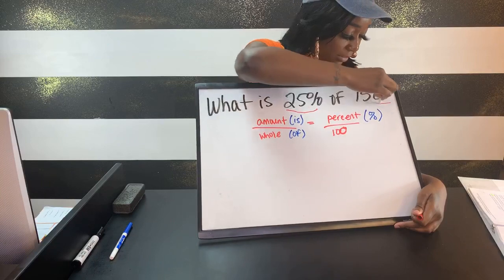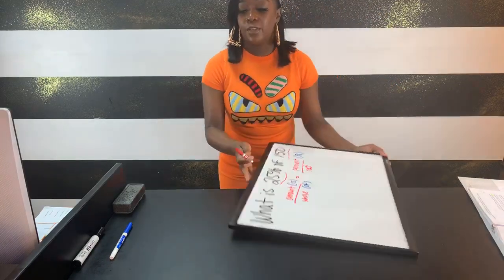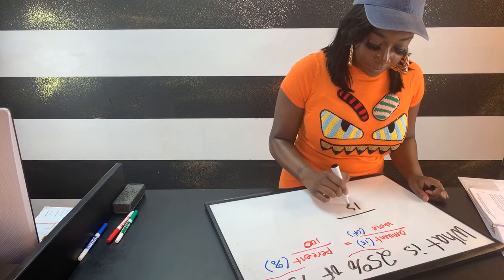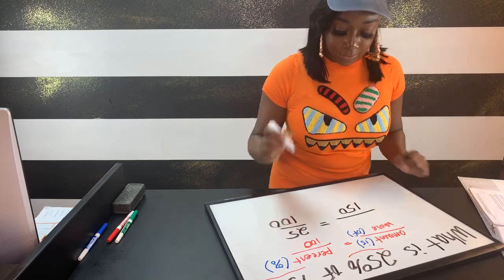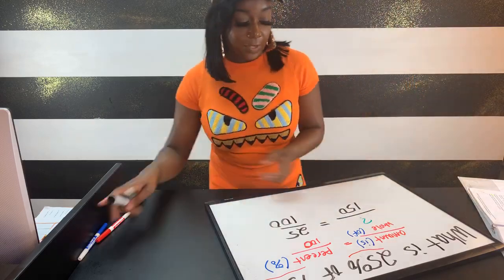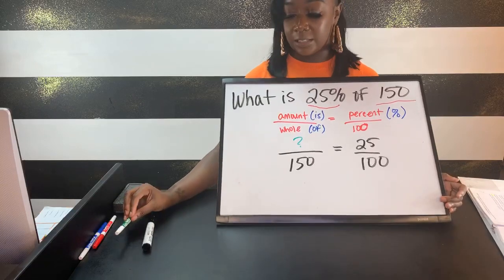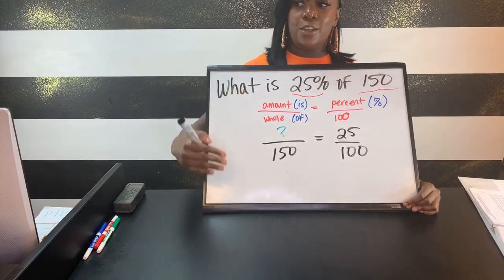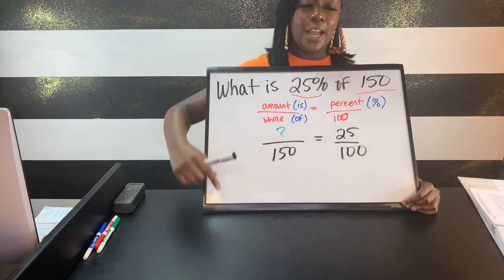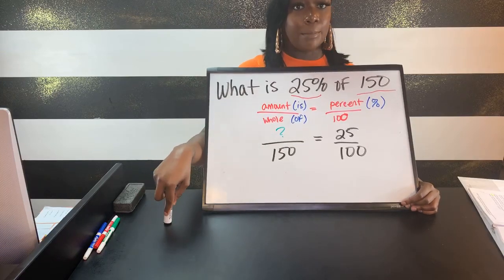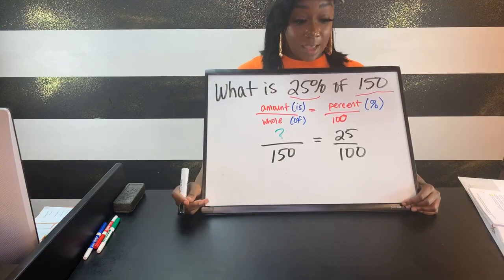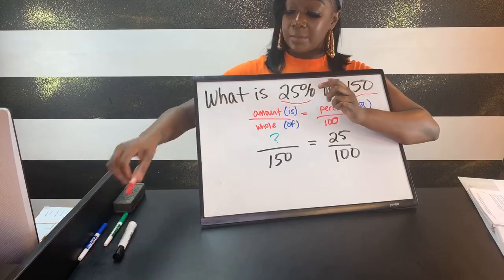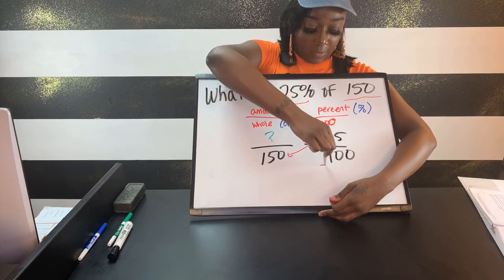So we have: blank over 150 equals 25 over 100. We're trying to figure out our amount. From here, just like with proportions, we cross multiply diagonally and divide by whatever number is left over. We do 25 times 150, then divide by 100. See why I always connect topics — ratios, proportions, and percentages all use the same setup, making it seamless to retain.